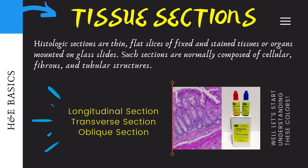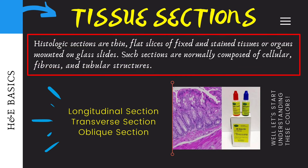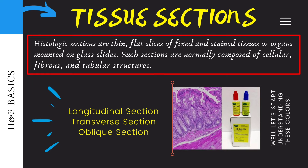Let us now talk about what a histologic section is. Histologic sections are thin, flat slices of fixed and stained tissues and organs which are mounted on a glass slide. Under such sections, we normally see cellular components, fibrous and tubular structures. Fibrous structures are generally solid structures mainly composed of connective tissue, while tubular structures are hollow structures like blood vessels, ducts, and glands.